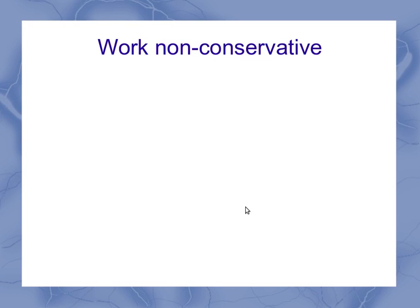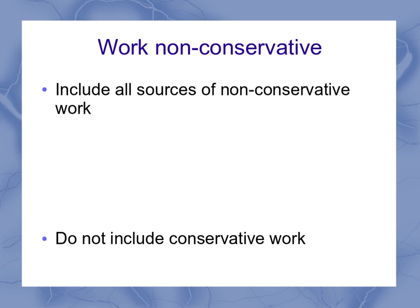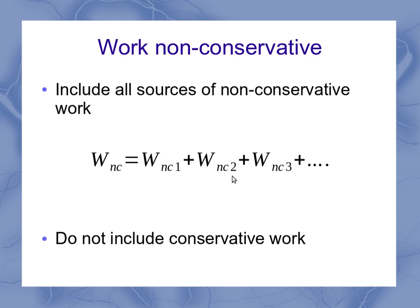When I look at the work non-conservative side of the equation, I need to make sure I include all sources of non-conservative work, but that I don't include any conservative work. I can think about it as: what's my non-conservative work number one, number two, number three? Some of these may be positive and some may be negative. Once I've included everything that's non-conservative, that total is my work non-conservative.